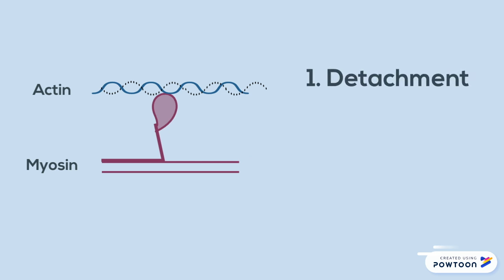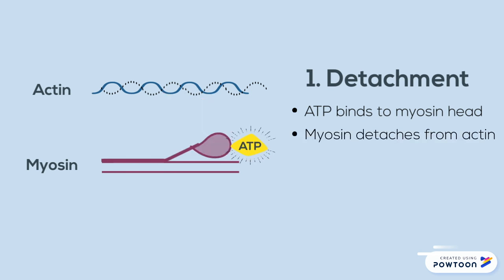I find it easiest to begin with detachment. This is when the myosin head detaches from actin. In order for detachment to occur, an ATP molecule must bind to the myosin head, and when this happens, myosin detaches from actin and goes into a resting state.